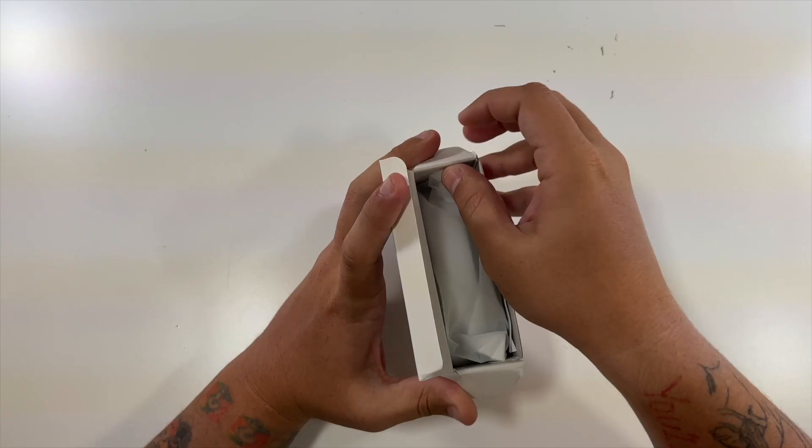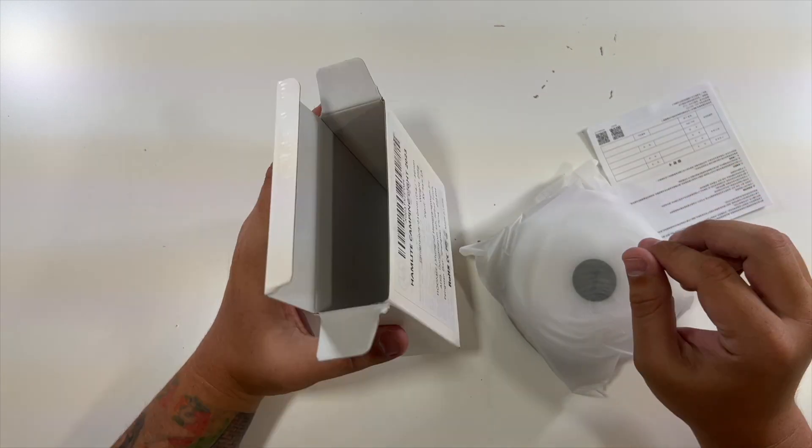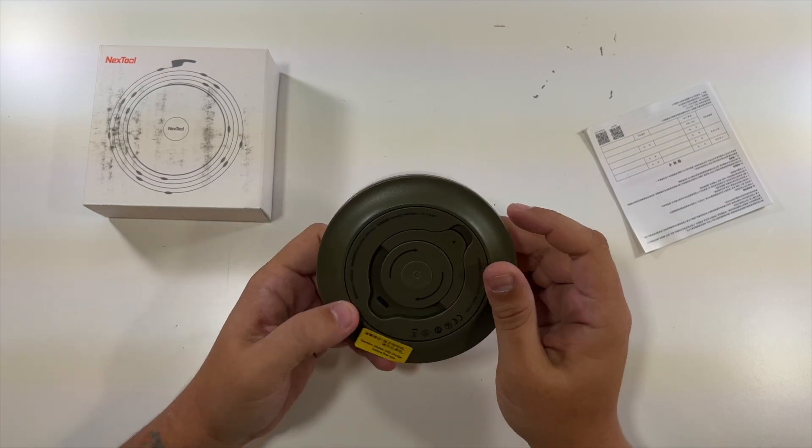Inside of this box is of course the camping light and instruction set. Well that's it for in the box. So here is the light.